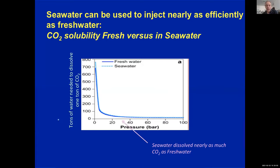We could use fresh water, which we did in Iceland. But it turns out that we could easily use sea water, which dissolves carbon dioxide in pretty much equal amounts to fresh water. Fresh water is probably a scarce commodity in many parts of the world, including areas around KAUST, whereas sea water is often free and readily available.